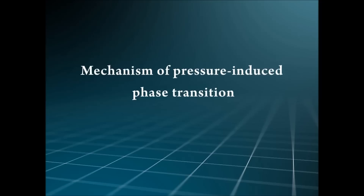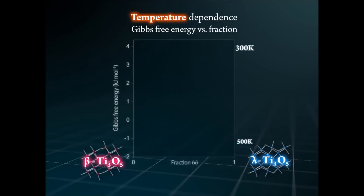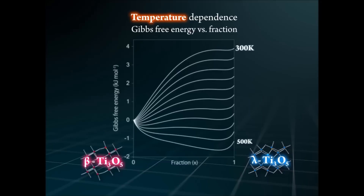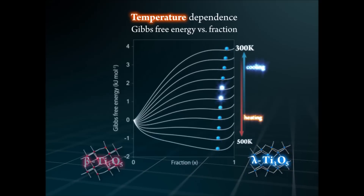The mechanism of pressure-induced phase transition is explained using the thermodynamic model. Gibbs free energy versus lambda phase fraction curves are shown, with lambda phase on the right and beta phase on the left. Lambda phase, shown with blue balls, is maintained at all temperatures due to the energy barrier between the two phases.